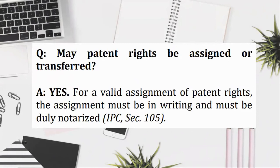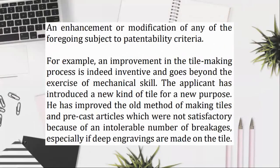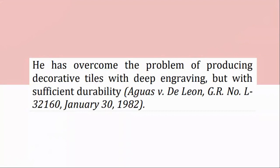Patentable inventions: any technical solution of a problem in any field of human activity which is (A) new, (B) involves an inventive step, and (C) is industrially applicable. It may be, or may relate to, a product, or process, or an improvement — an enhancement or modification of any of the foregoing subject to patentability criteria. For example, an improvement in a tile-making process is indeed inventive and goes beyond the exercise of mechanical skill. The applicant introduced a new kind of tile for a new purpose. He improved the old method of making tiles and pre-cast articles, overcoming the problem of producing decorative tiles with deep engraving but with sufficient durability. Aguas v. de Leon, GR No. L-32160, January 30, 1982.